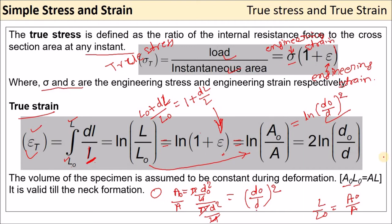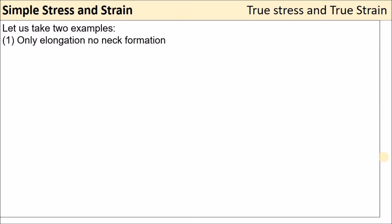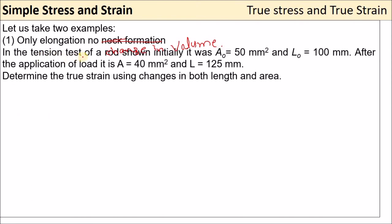Now let's solve some numerical problems — two different examples. First example: no necking formation, only elongation. In the tension test, a rod initially has initial area A₀ = 50 mm² and initial length L₀ = 100 mm.